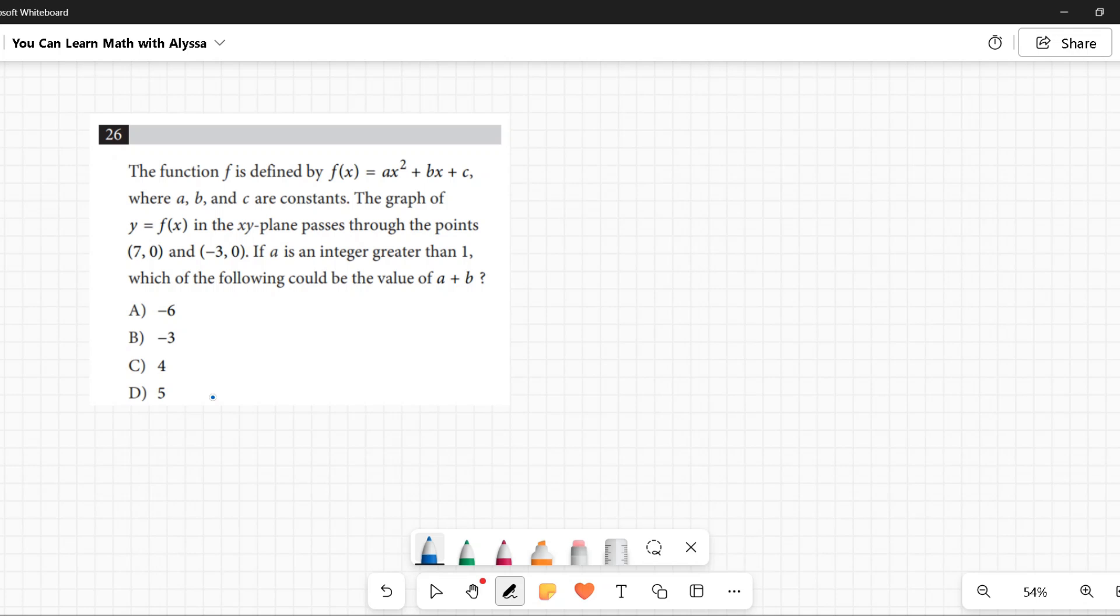So f(x) = ax² + bx + c—that is a parabola. We don't know what a, b, and c are, so it can be any of those, but we know basically the type of shape that a parabola is.